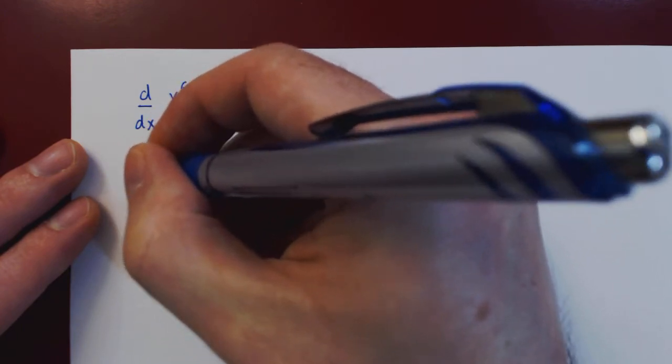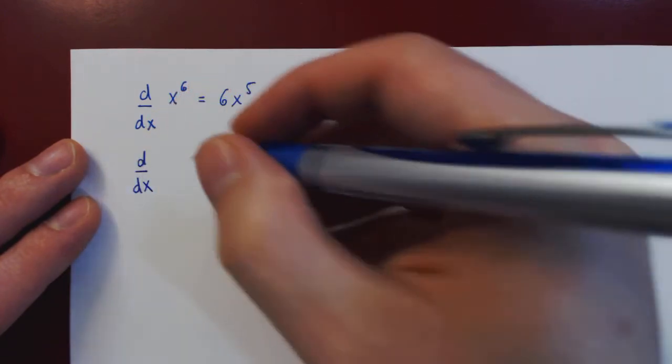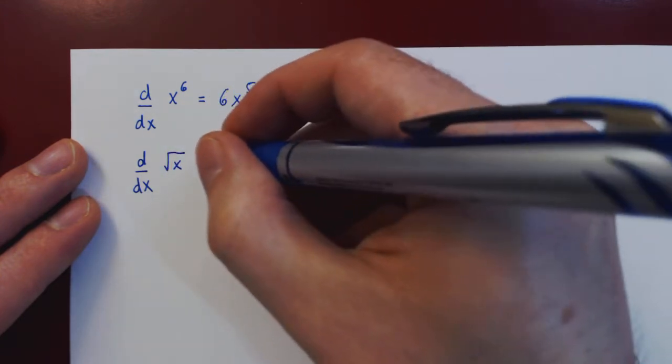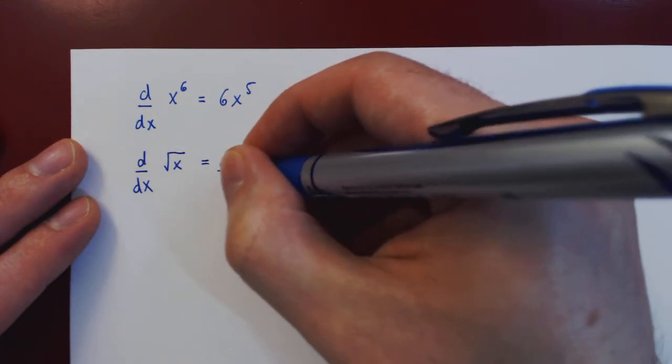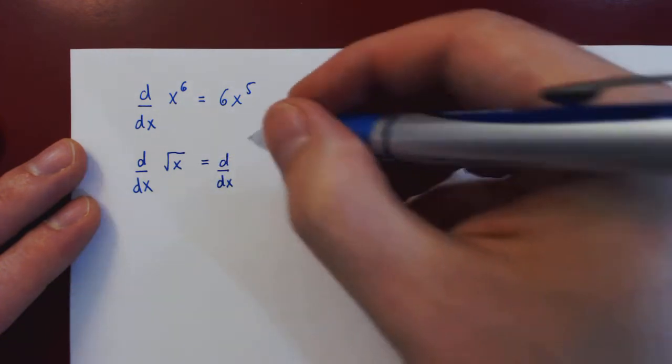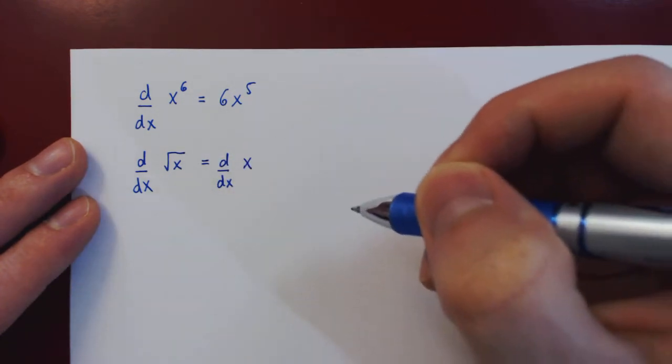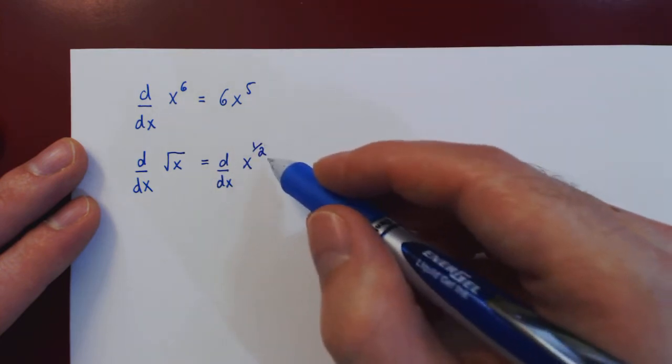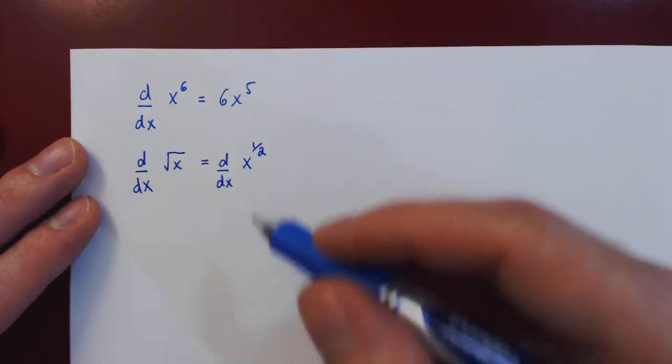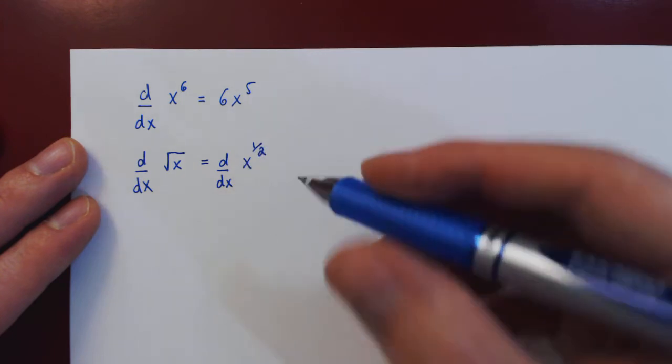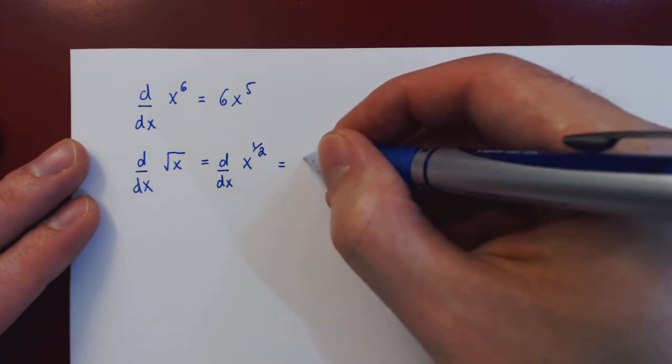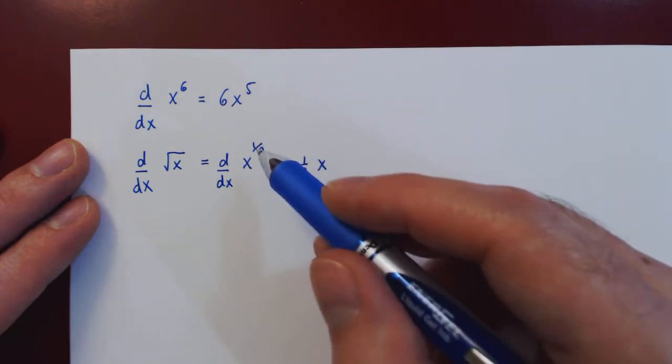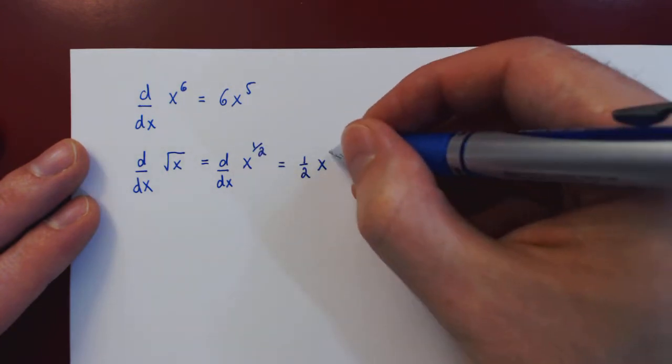What if you ask for the derivative of, say, the square root of x? Well, before you can differentiate, you have to rewrite the square root of x as an exponent of 1 half. x to the 1 half is the same as the square root of x, and now we can apply the power rule. So we bring down the exponent, 1 half, and we subtract 1 from the original exponent. 1 half minus 1 is negative 1 half.